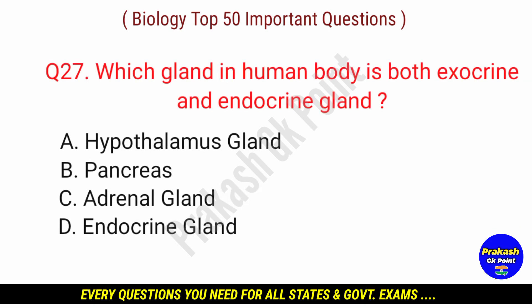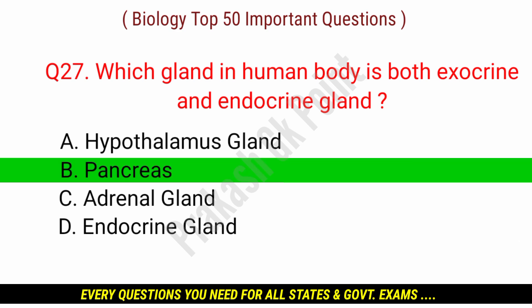Next question: which gland in the human body is both an exocrine and endocrine gland? Answer: option B — Pancreas.